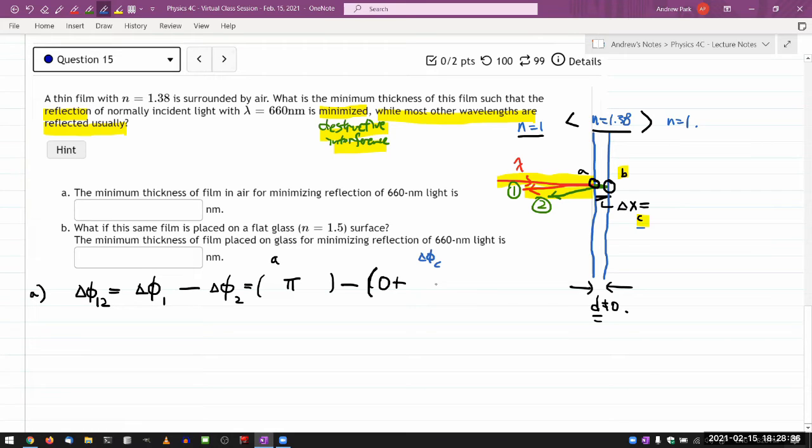This additional distance will be twice the thickness. Let me write down the whole expression for the phase shift for part C. I'm going to first count the number of cycles of a wave. It will be the total path delta x divided by the wavelength in the material.